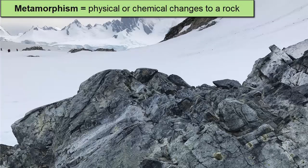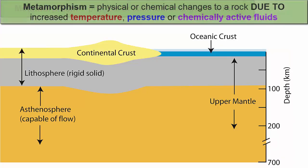Metamorphic rocks are rocks that have undergone metamorphism, or change. When rocks are subjected to temperatures, pressures, or chemically active fluids higher than what is normally found at Earth's surface, or within about the first kilometer of Earth's surface, these rocks will undergo physical and chemical changes and create new metamorphic rocks.